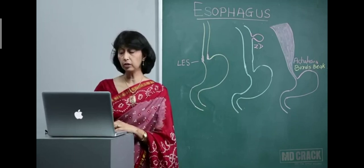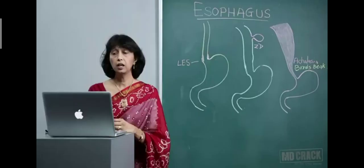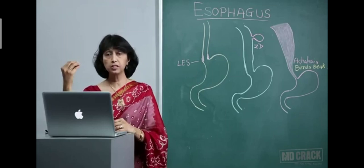Esophageal motility disorders include diverticula, diffuse esophageal spasm, hypertensive lower esophageal sphincter, nutcracker esophagus, and most importantly, achalasia. In achalasia there is decreased tone, whereas in hypertensive sphincter there is increased tone. In all these disorders, there is a defect in the propulsion of food from the mouth and pharynx to the stomach — the food does not go completely or easily to the stomach.